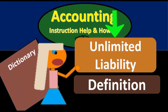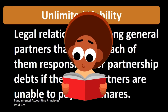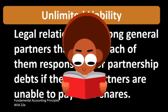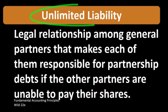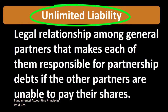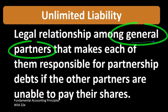In this lecture we will define unlimited liability according to Fundamental Accounting Principles, Wild 22nd edition. The definition of unlimited liability is the legal relationship among general partners that makes each of them responsible for partnership debts if the other partners are unable to pay their shares. In this context, we are clearly thinking about the business structure of a general partnership.